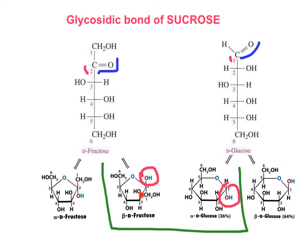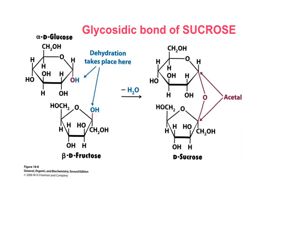The dehydration between fructose and glucose to form the glycosidic bond uses the hydroxyl group of carbon number two, which is the anomeric carbon of fructose, and the hydroxyl group of carbon number one, which is also the anomeric carbon of glucose. It is convenient to place the structure of glucose on top of fructose: alpha-glucose has OH below the plane, and beta-fructose is below. The dehydration reaction produces a new glycosidic bond, which is an acetal because this carbon is bonded to two OR groups.